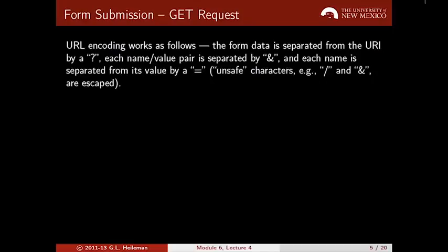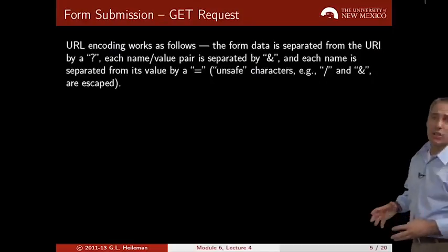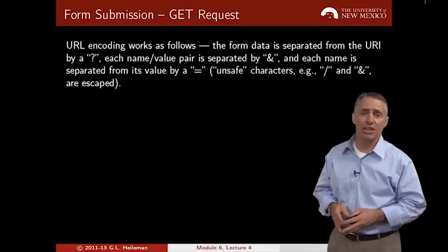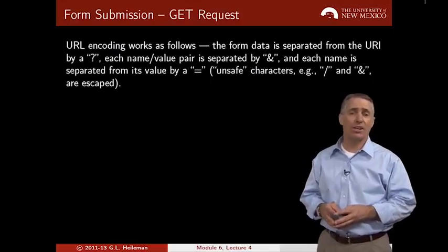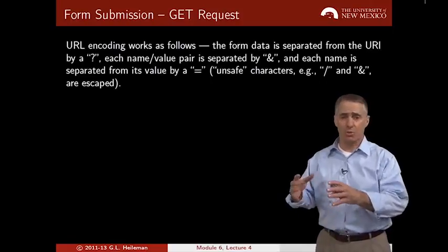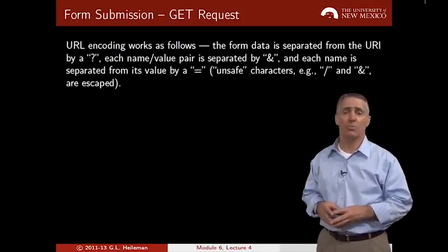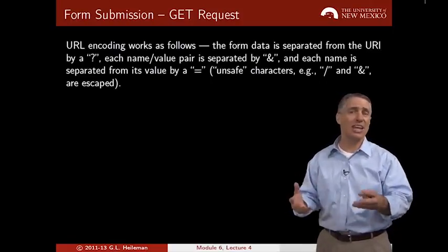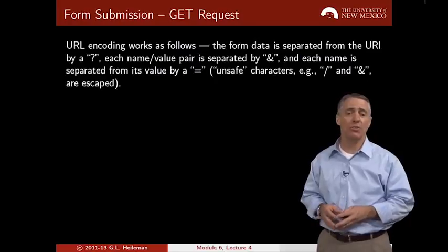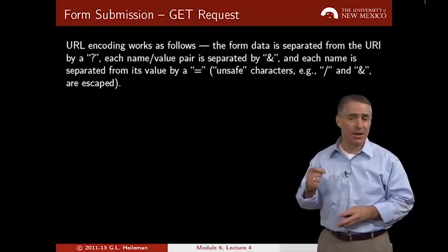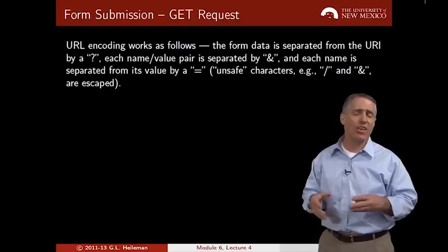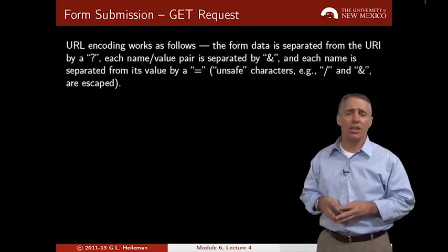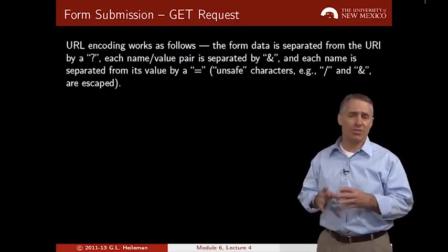Here's how URL encoding works for a GET request. The form data is separated from the original URL by a question mark, and then there are name-value pairs separated by an ampersand, with an equal sign between each name and value. If there are unsafe characters, they need to be escaped.